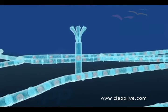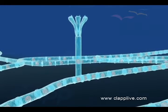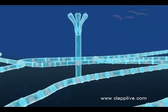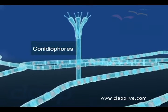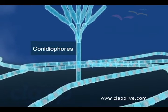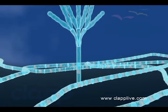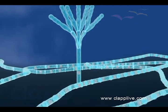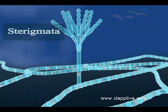During asexual reproduction, erect branches called cornidophores are produced from a fungal hyphae. At their tip, cornidophores branch and form clusters of flask-shaped cells called sterigmata.